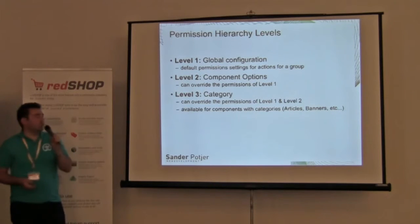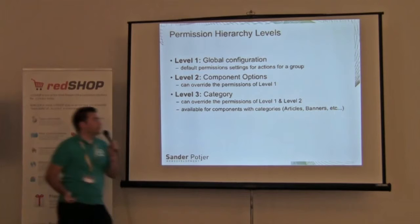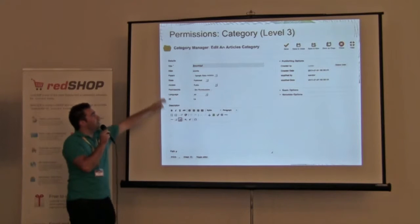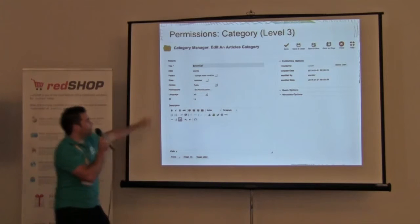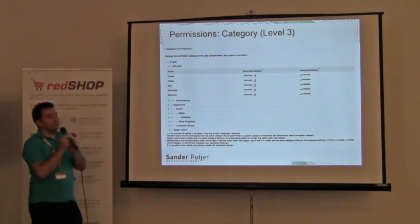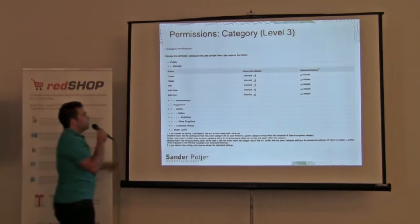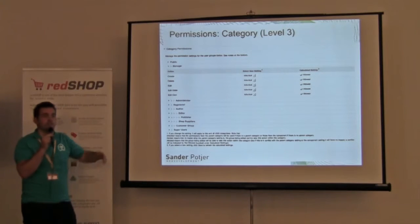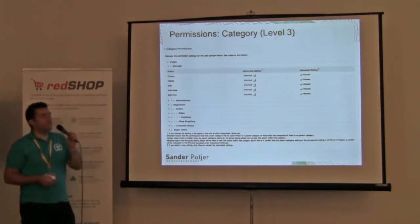Level three is the category. These are the permissions you can override from level two and level one in the category overview. When you open a category, there's a permissions button. Clicking it scrolls down to show the available actions for that category. At this level we have fewer options — no 'access component' — just create, delete, edit, edit state, and edit own.